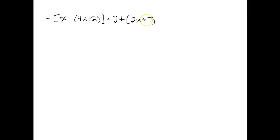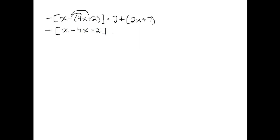This is the linear equation in one variable, and our variable is x. There are no fractions or decimals, so I need to simplify each side. On the left side, parentheses are the innermost grouping symbols, so I work with them first. I distribute the minus sign in front of the parentheses, then inside the brackets combine like terms: x minus 4x gives negative 3x, and minus 2 stays. Finally, I distribute the minus sign outside the brackets to get 3x plus 2.